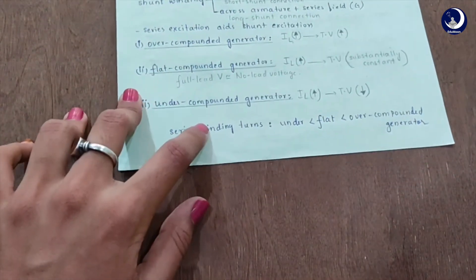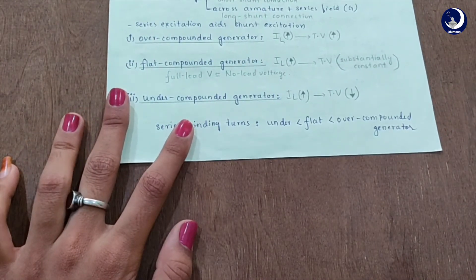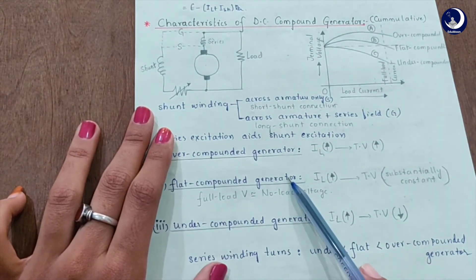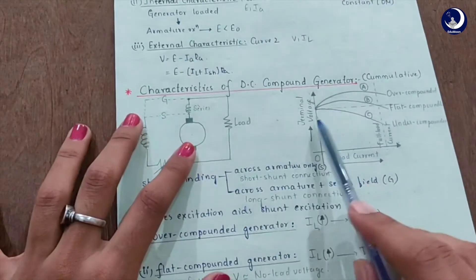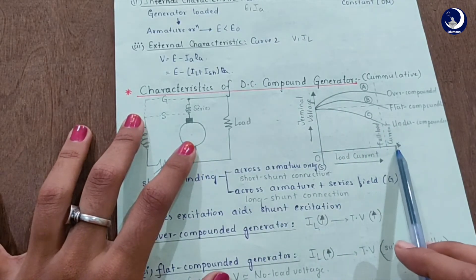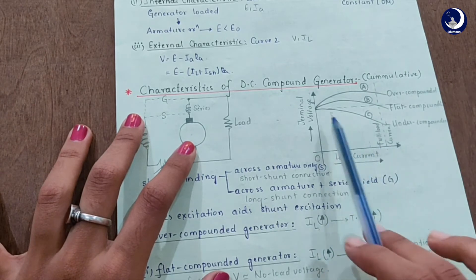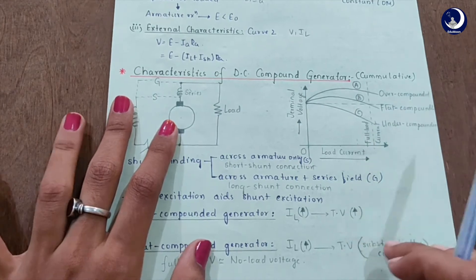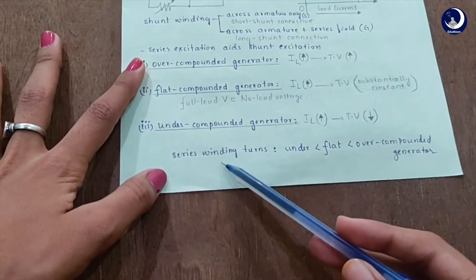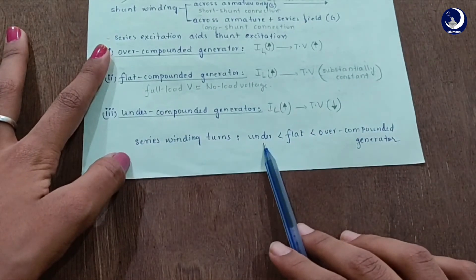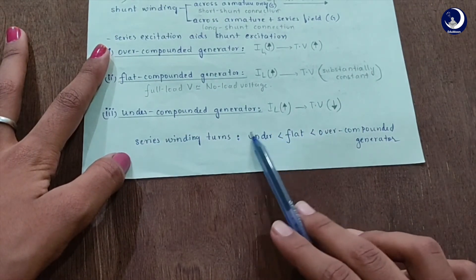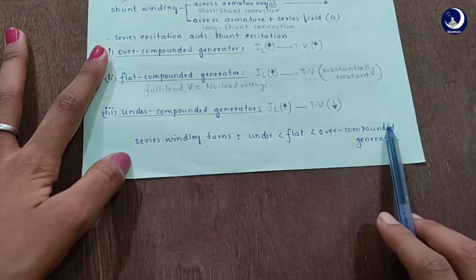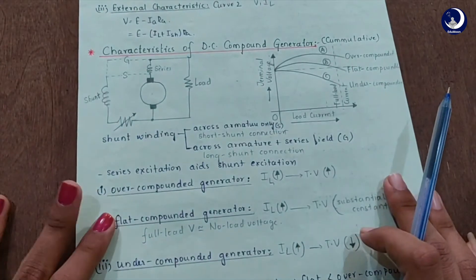The third type is the under-compounded generator. Here the series field winding has fewer turns compared to the flat-compounded generator, so the terminal voltage falls with an increase in load current. As seen on curve C, as load current increases, the terminal voltage decreases. In summary, the series winding turns are greatest for the over-compounded generator and least for the under-compounded generator.